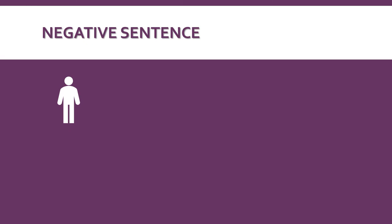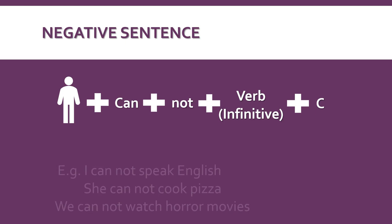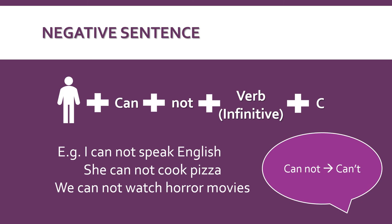In the case of the negative sentence we're also going to start with the pronoun, next we write can, then the word not because it is a negative sentence, then the verb in infinitive tense, and finally the complement. For example: I cannot speak English, she cannot cook pizza, we cannot watch horror movies. We can also join those two words can and not and say can't.